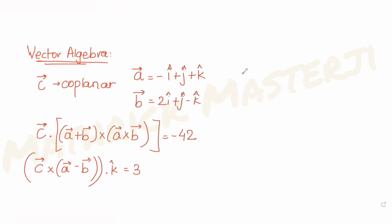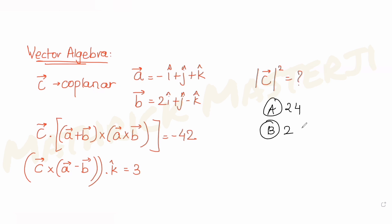The question asks us to find the magnitude of vector c squared. The answer choices given are 24, 29, 35, and 42. We need to figure out which one is correct, so let's solve this question.